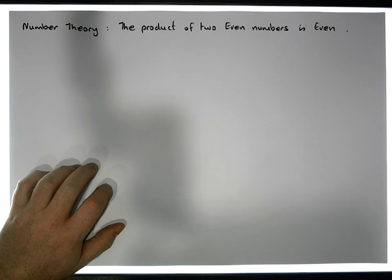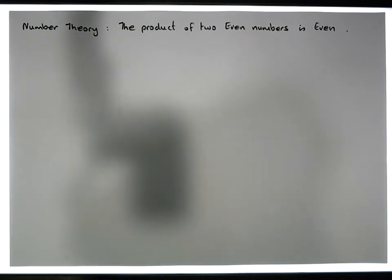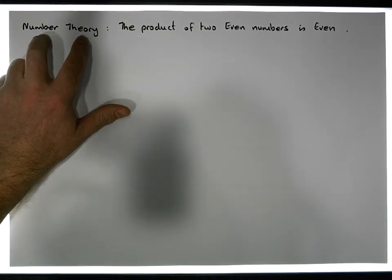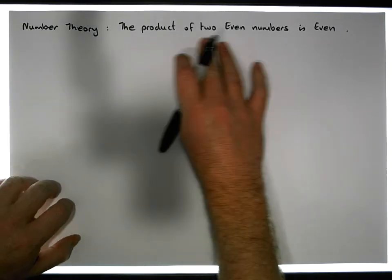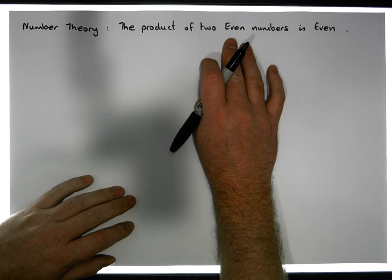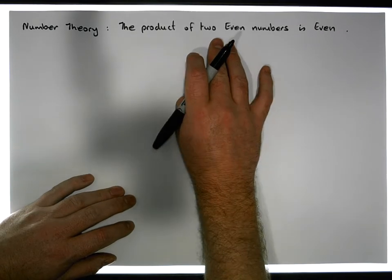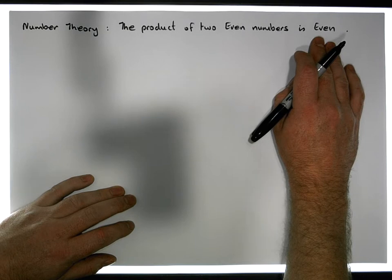Hi guys, this is Jonathan Lambert with the Mathematics Development and Support Service at the National College of Ireland. In this short video, another video in our series of videos on number theory, we're going to look at another simple proof. This proof is concerned with the product of two even numbers and the property that the product of two even numbers is actually an even number.